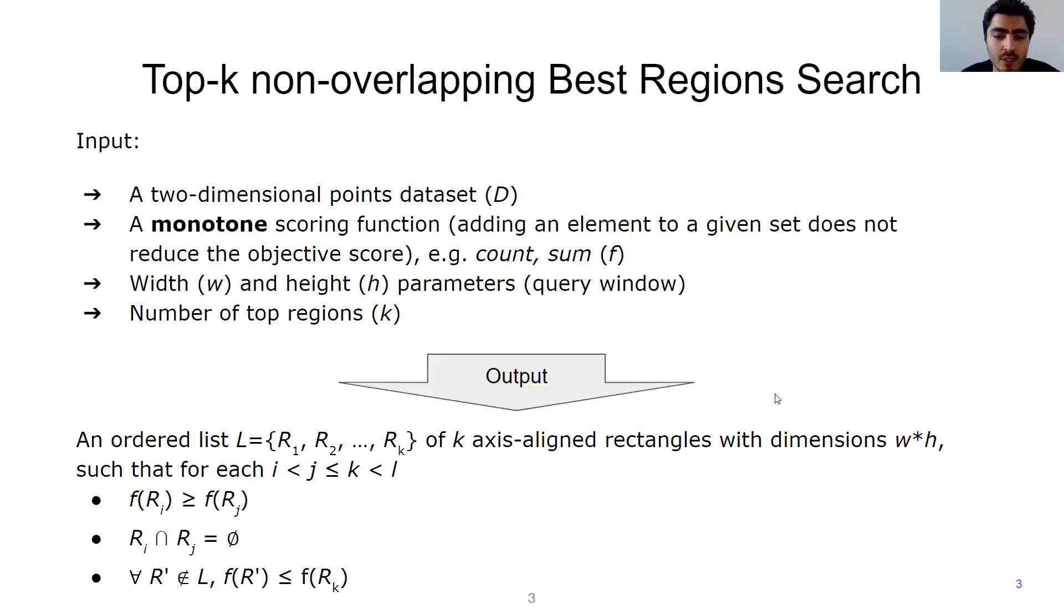Today, I will only discuss the case that the user is searching for non-overlapping regions, but the algorithm also works for partial overlap cases. Here are the inputs of the algorithm and the output is the top-k non-overlapping regions.